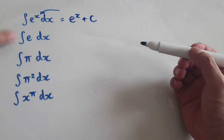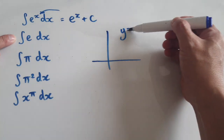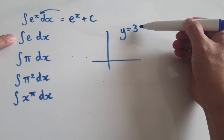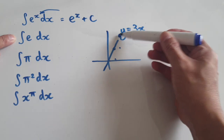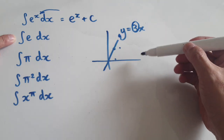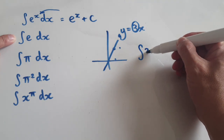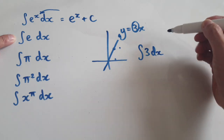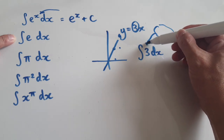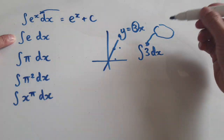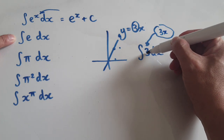Now, to integrate a constant — if I were to give you y equals 3x, the graph would look like this: 1 across, 3 up — it has a gradient of 3. So when I ask you to integrate 3 dx, you're looking for something such that when you differentiate it, it gives you 3. Well, the answer turns out to be 3x, because when you differentiate 3x it gives you 3.